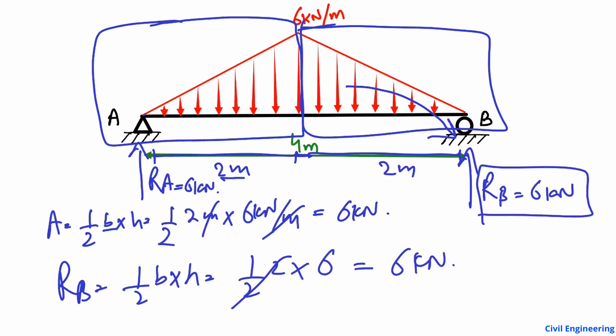This is how to find support reactions for a simply supported beam with a symmetrical uniformly varying load. With symmetry, you simply divide by two to get the support reactions. Hope you understood — don't forget to subscribe for daily civil engineering videos. Thank you for watching.